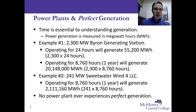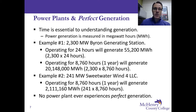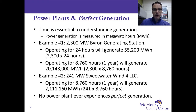We can do this same procedure with any power plant on the planet. For example, the Sweetwater Wind Farm has a much smaller capacity than the Byron Generating Station, but the same procedure applies when we ask how much electricity is generated over a year. If we operate the Sweetwater Wind Farm for an entire year at 100% capacity, perfectly generating electricity over that entire year, it will generate 2,111,160 megawatt hours.